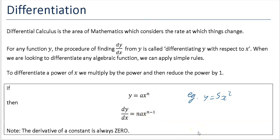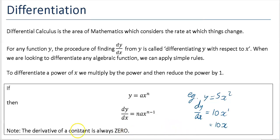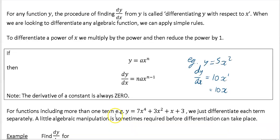So in this example, y equals 5x squared. For dy by dx, the power 2 comes down and multiplies 5 to give you 10, and your x is now to the power of 1, so you write that as 10x. It also says here: the derivative of a constant is always 0.